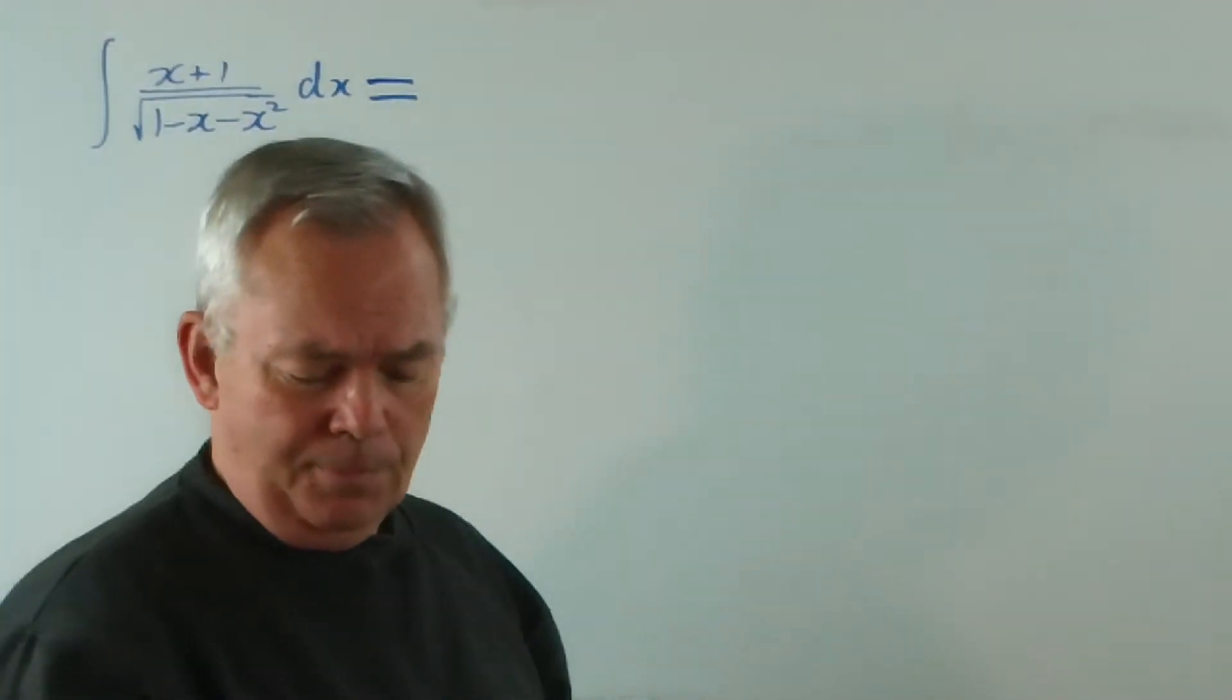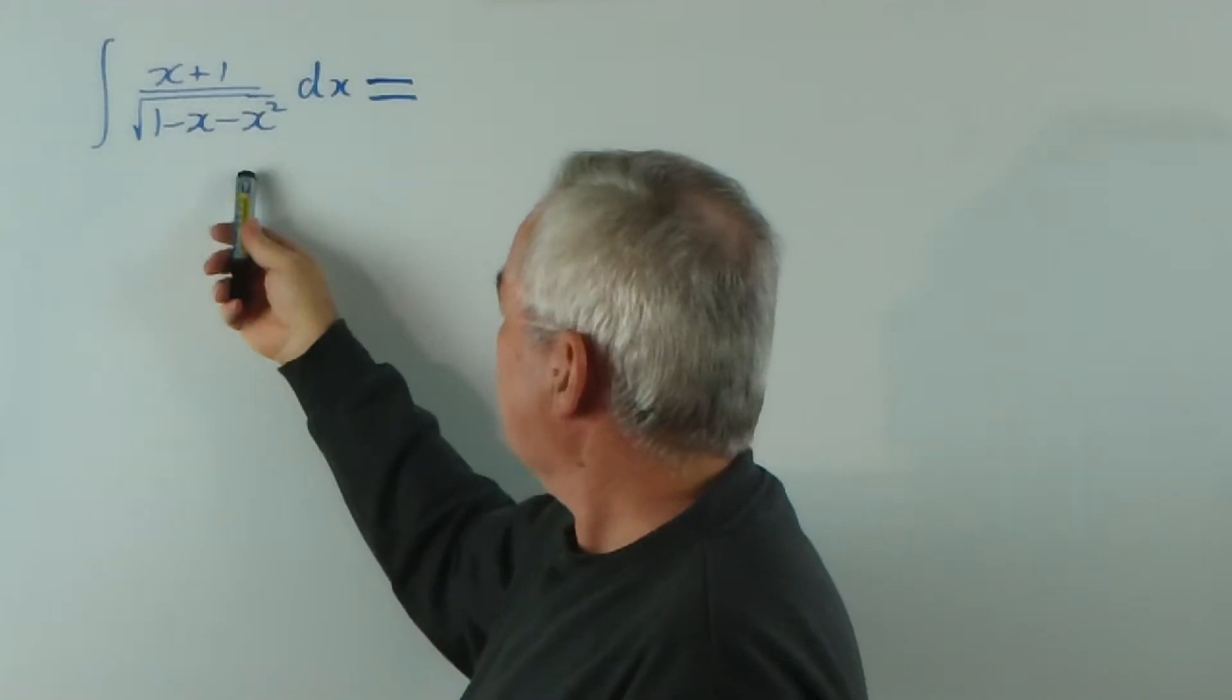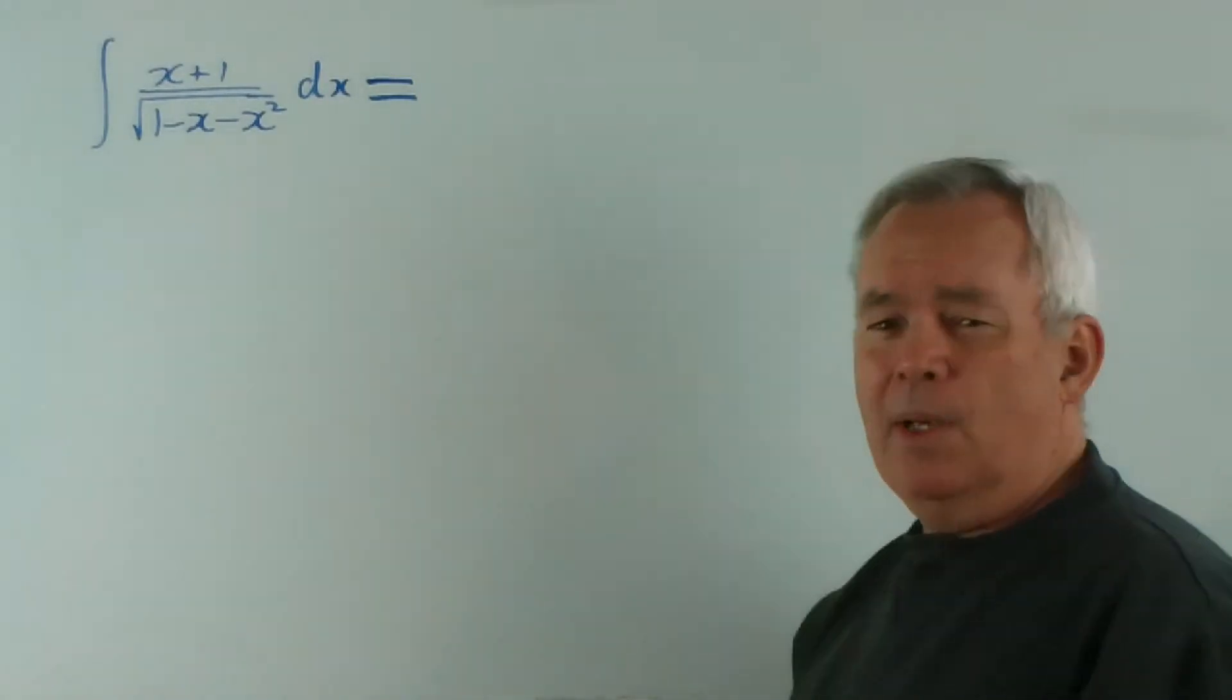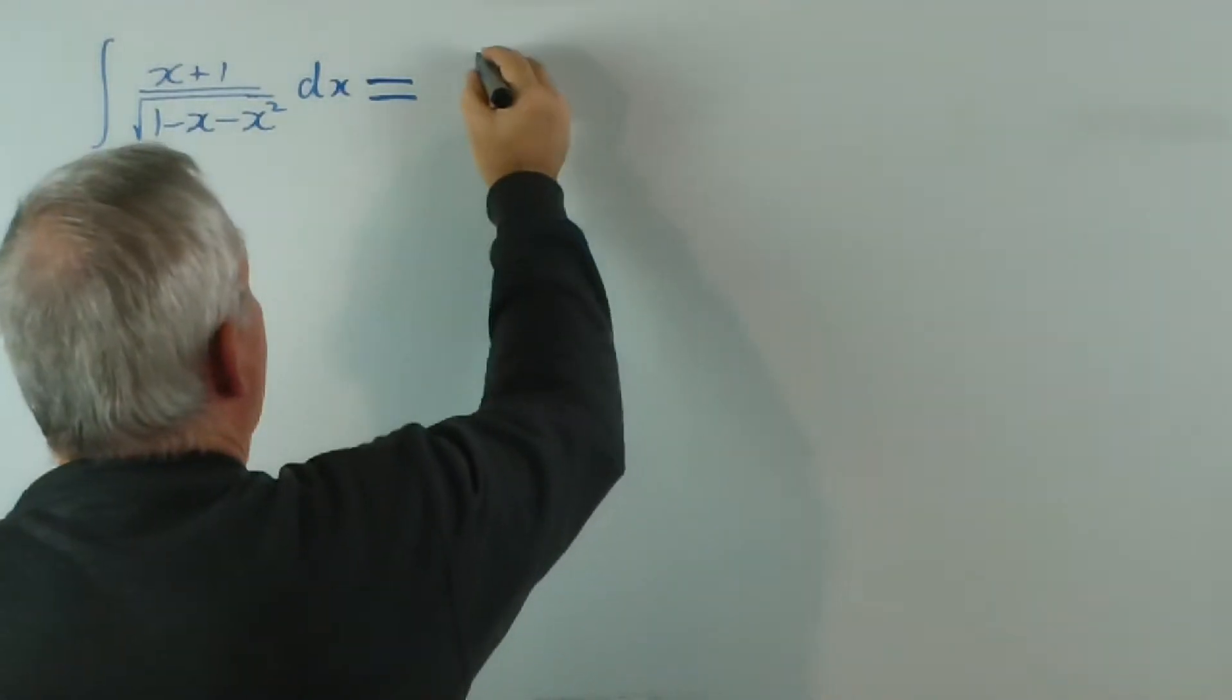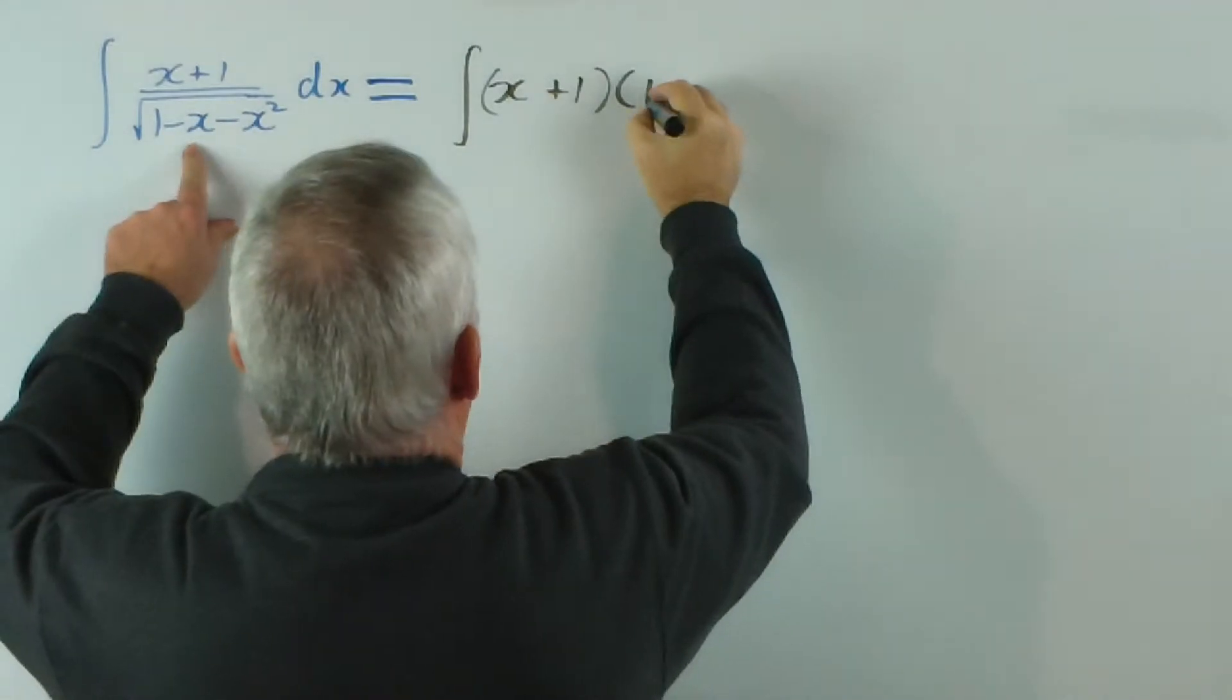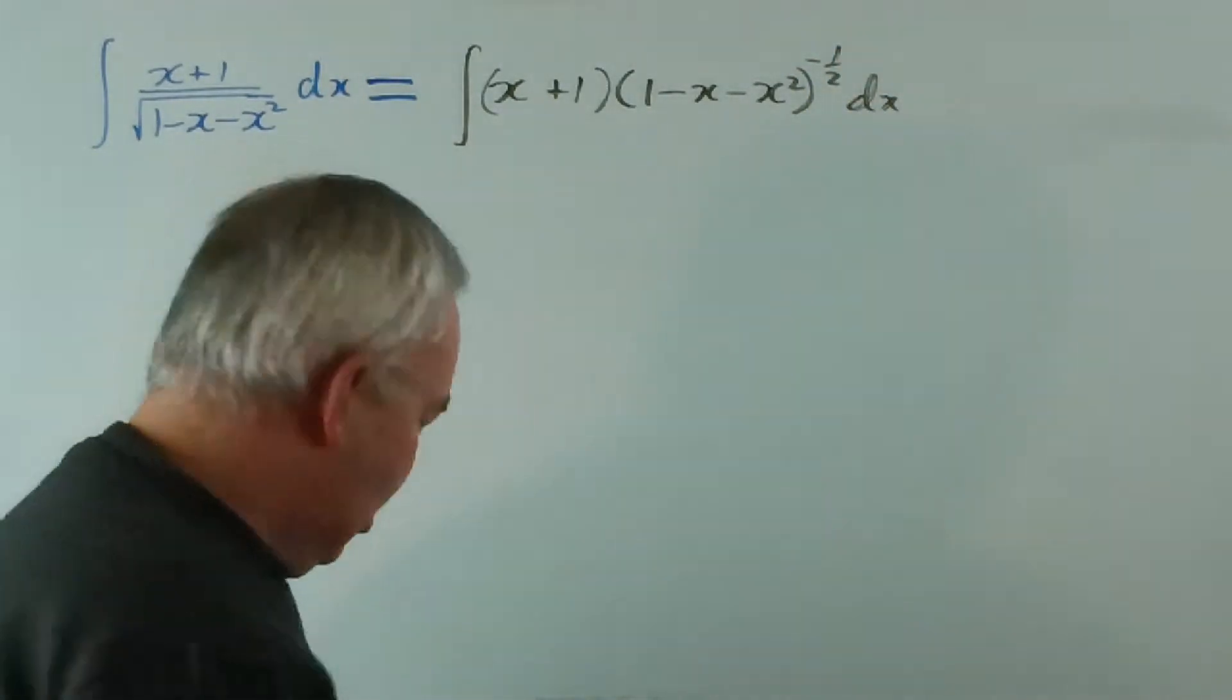We might use it maybe. But, for the moment, the next observation we make is that the derivative of this inside, since it's a quadratic, is linear and very similar to that. So, that would suggest that we might be able to develop a chain rule. So, let's have a look. I would rewrite the integral this way: x plus 1 times 1 minus x minus x squared to the power negative 1 half dx.